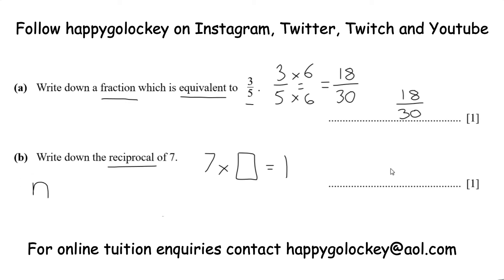The reciprocal of any number n is 1 over n. So for example, the reciprocal of 10 would be 1 tenth. And the reason that works is because 10 multiplied by a tenth would take you back to 1. So the reciprocal of any number is 1 over that number. Therefore, the reciprocal of 7 would be 1 seventh. That's the reciprocal.